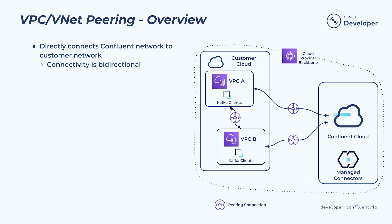Peering connectivity is a common pattern in cloud networking. It sets up a direct network connection between your network and the Confluent Cloud network. You tell us what CIDR range you want us to use — it has to be a slash 16 — and we'll provision the network. In the Confluent network, you can provision one or more Confluent clusters, which can all be accessed over the peering connection.